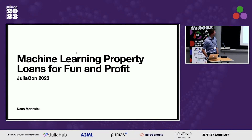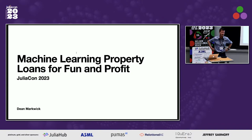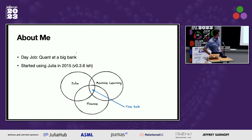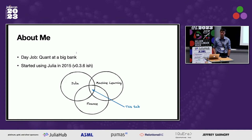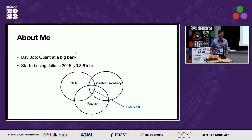Good afternoon everyone. This talk is about machine learning property loans for fun and profit — a very applied talk about how we can use the MLJ framework and hopefully make some money out of it. I'm a quant at a big bank during the day, and I've been using Julia since about 2015, version 0.3.6. In my old job I was also using Julia professionally with a lot of analytics written in it.